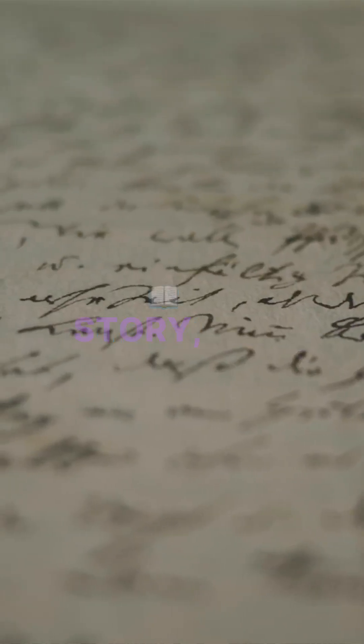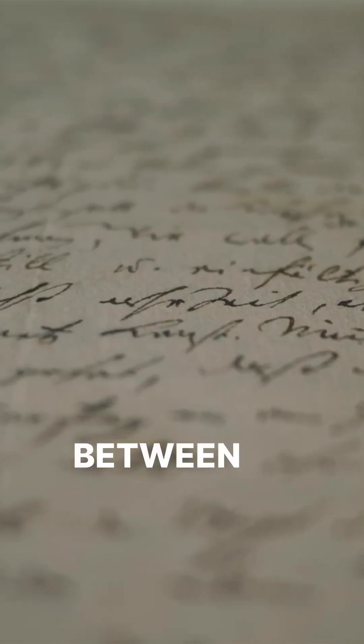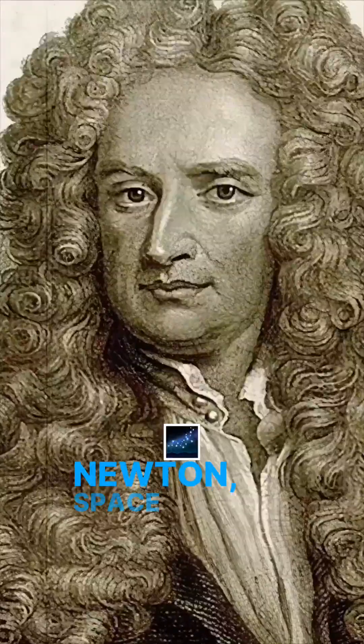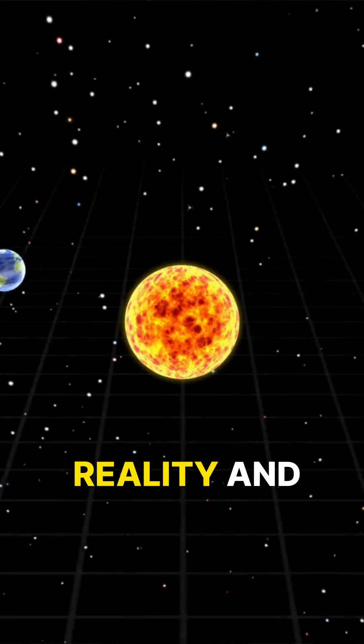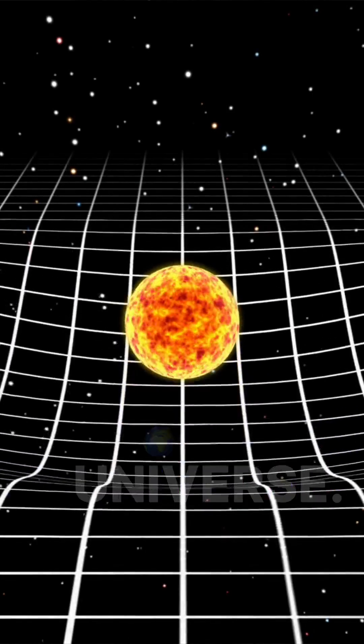Remember, at the start of this story we heard about the disagreement between Newton and Leibniz. To Newton, space and time were part of reality and existed independent of the matter in the universe.